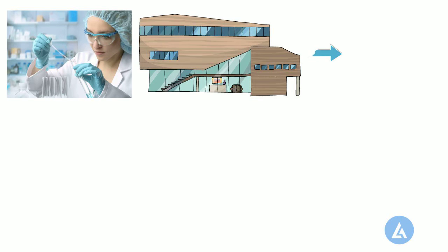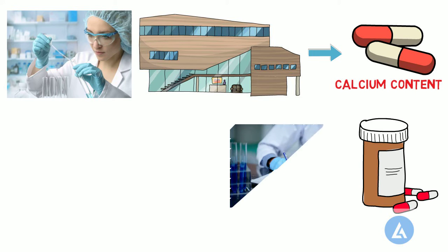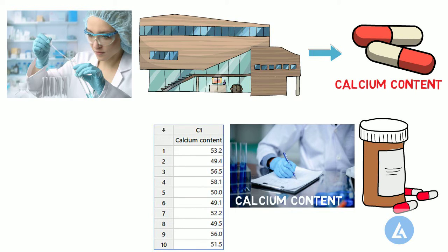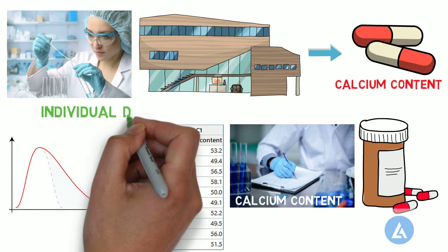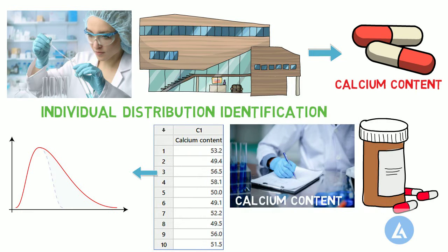For example, a quality engineer for a nutritional supplement company wants to assess the calcium content in vitamin capsules. The engineer collects random samples of capsules and records their calcium content. To determine which statistical analysis is appropriate for the data, the engineer first needs to determine the data distribution. Therefore, the engineer performs Individual Distribution Identification to determine which distribution best fits the data.